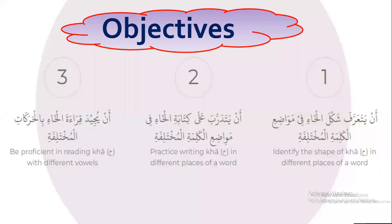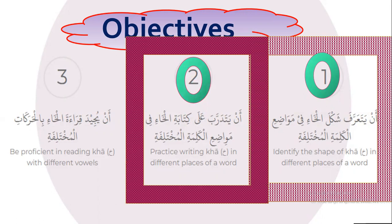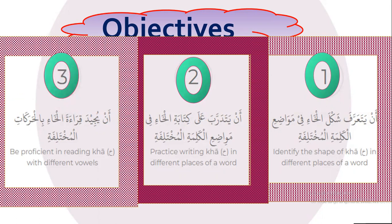Let's start with the objectives. Today inshallah we will learn three objectives from this lesson. The first objective is to identify the shape of Kha in different places of a word. The second objective is to practice writing Kha in different places of a word. The third objective is proficiency in reading Kha with different vowels.